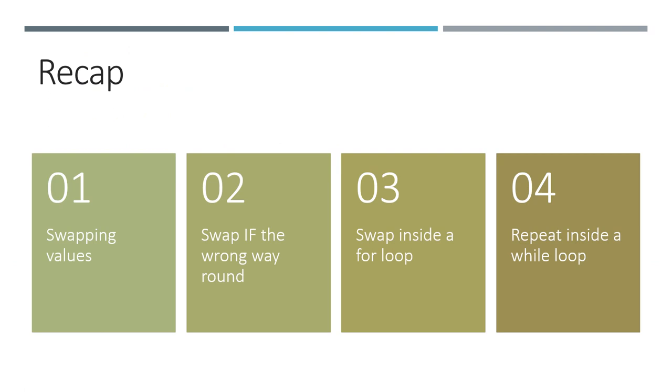So to recap, we saw how to use tuple substitution to swap two values. We put that inside an if structure so that we only swap the values if they were the wrong way round.